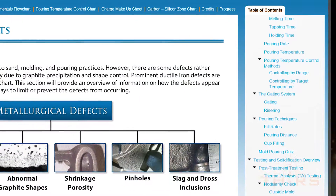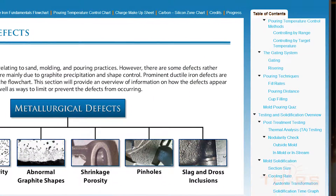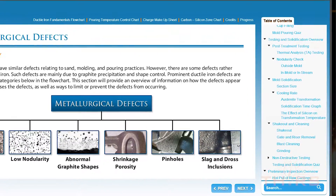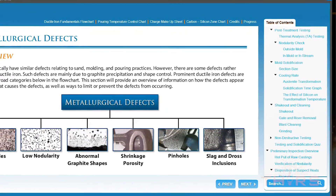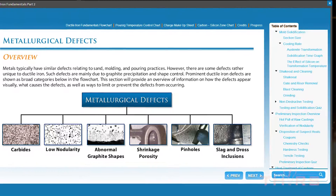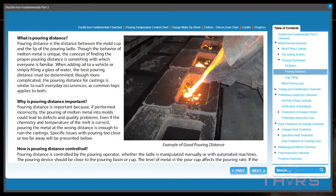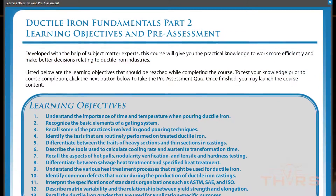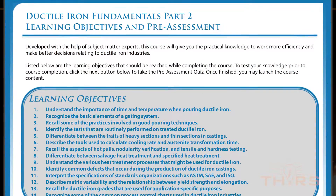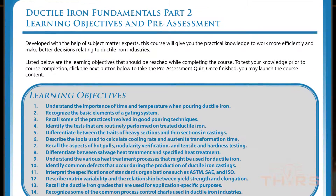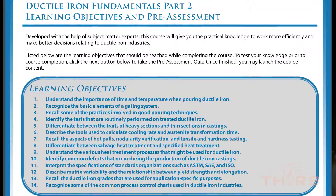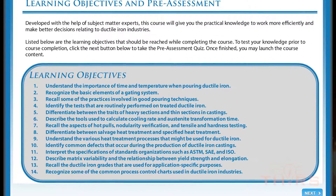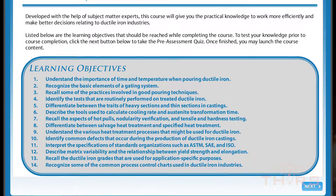What is included in the latest ductile iron course from THORS? Ductile Iron Fundamentals Part 2 picks up where the first course left off and takes learners through a step-by-step process of pouring ductile iron into molds and the solidification that follows. Some of the learning objectives include the importance of time and temperature when pouring ductile iron, the basic elements of a gating system, and practices involved in good pouring techniques.